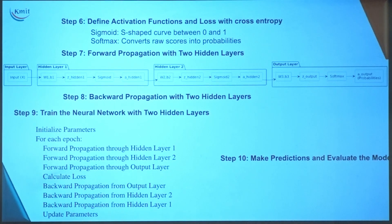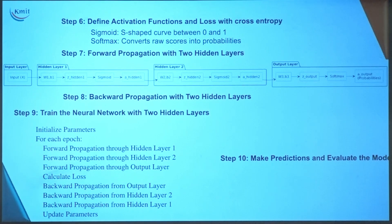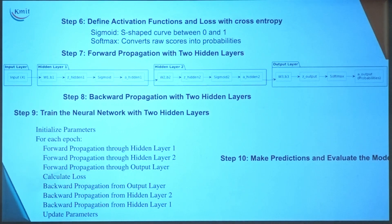We'll implement sigmoid and softmax, followed by forward propagation of two hidden layers. Previously you learned with one hidden layer, now two hidden layers. We will train for epochs — please use only two epochs, as 100 epochs may crash your system.